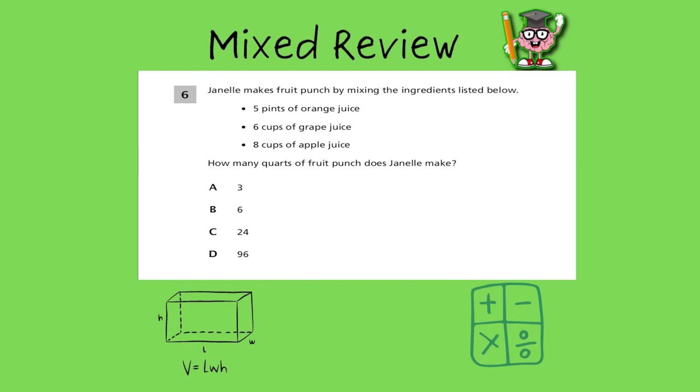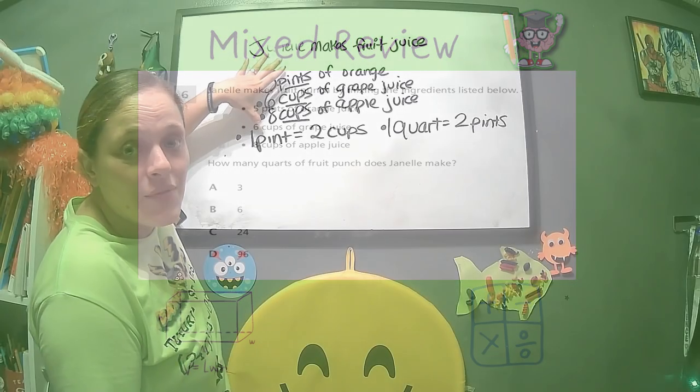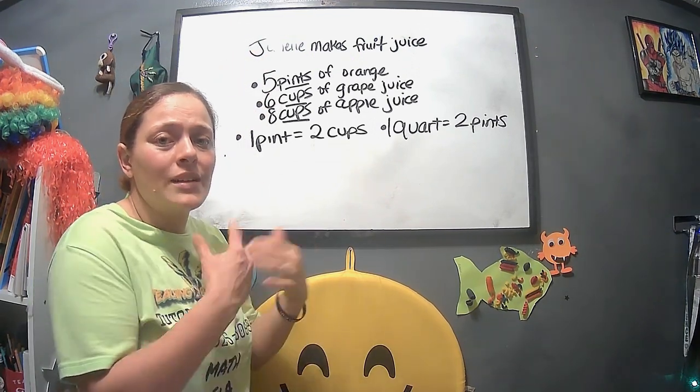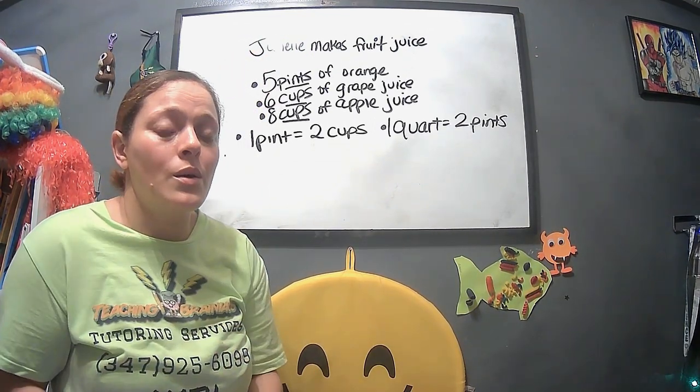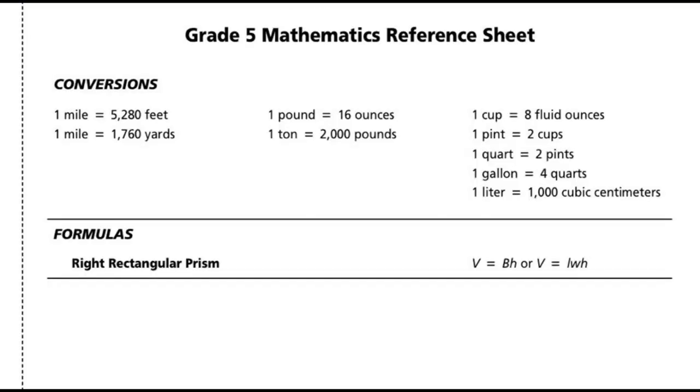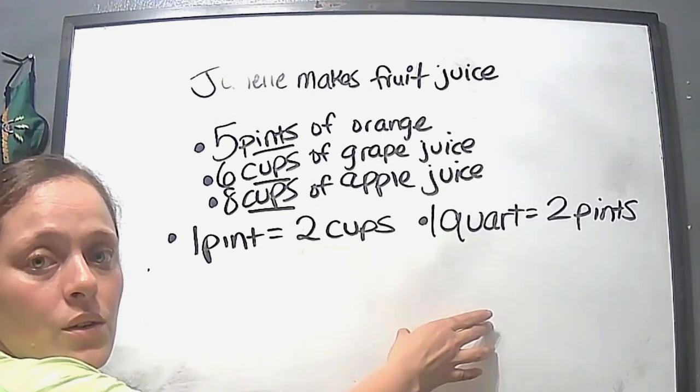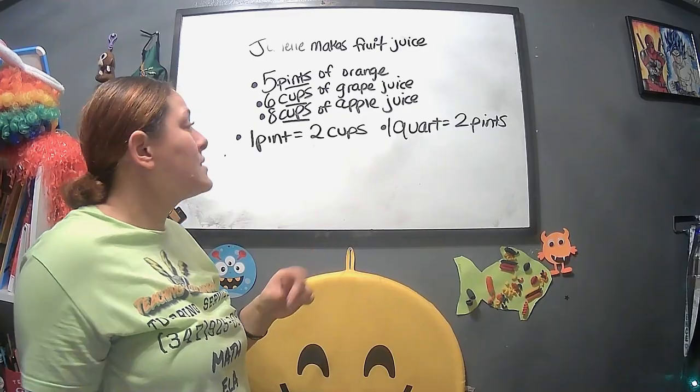Janelle makes fruit punch by mixing the ingredients listed below. 5 pints of orange juice, 6 cups of grape juice, 8 cups of apple juice. How many quarts of fruit punch does Janelle make? We have definitely 2 different types of units of measurements. So that is already telling me that I have to go back to our reference sheet.